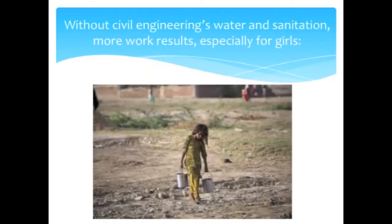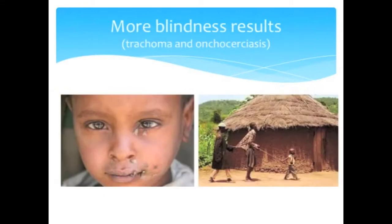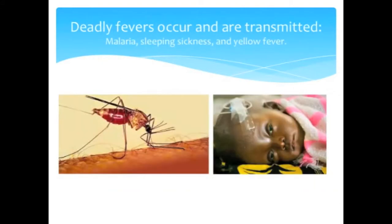Here you see a common sight from communities without water services: a primary school-age girl carrying water rather than attending school. Everyone is infected by nutrient-consuming worms and becomes dehydrated due to diarrhea. Blindness is more common. Trachoma happens when children don't have water to wash their faces. River blindness is common where people are bitten by infected flies that breed in contaminated water.